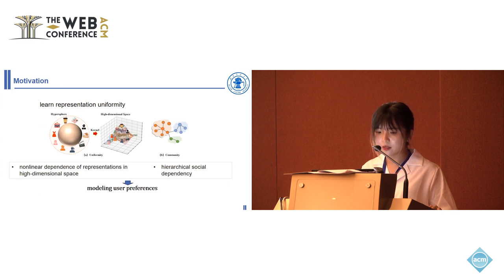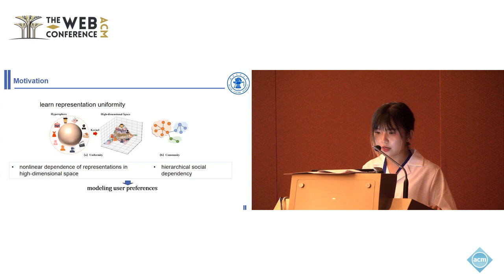Nonetheless, applying contrastive learning to downstream recommendation tasks remains challenging, as existing contrastive learning methods encounter difficulties in capturing the nonlinear dependence of representations in high-dimensional space and struggle to learn hierarchical social dependency among users, which are essential for modeling user preferences.